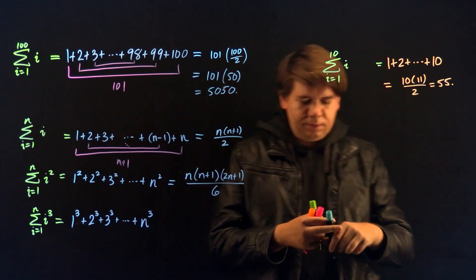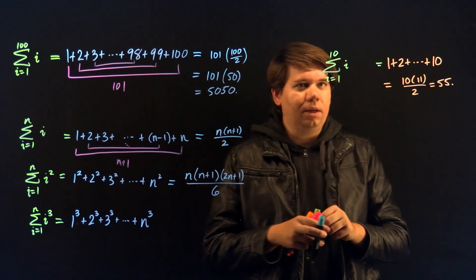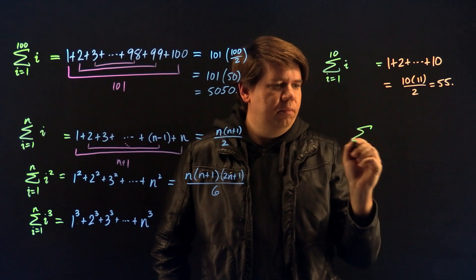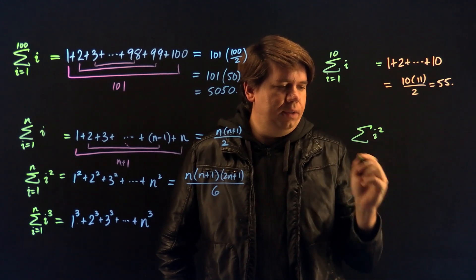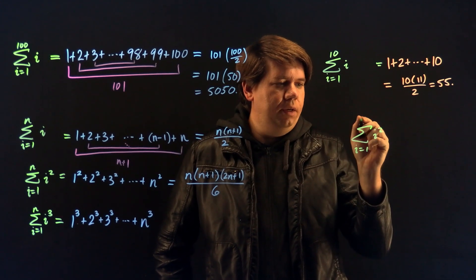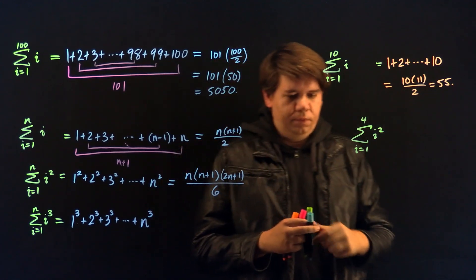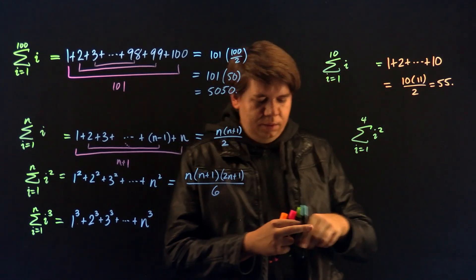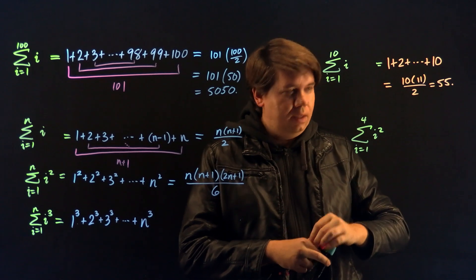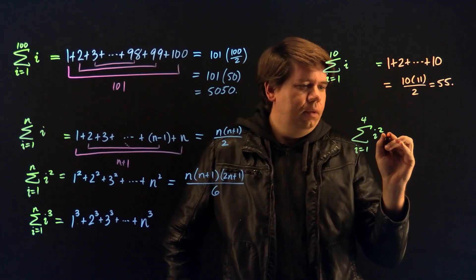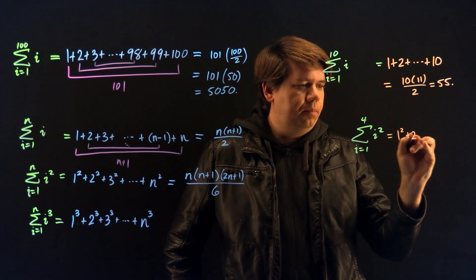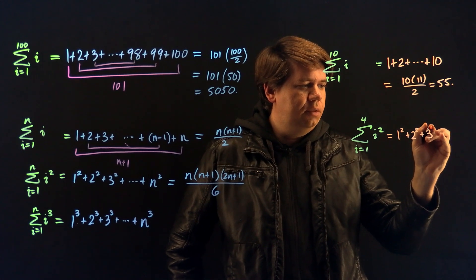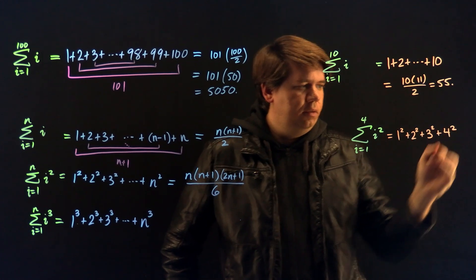Let's test it really fast. Let's say I want to calculate what is the sum of i squared from i equals 1 to 4. So, what does this mean? This simply means that I'm going to have 1 squared plus 2 squared plus 3 squared plus 4 squared.